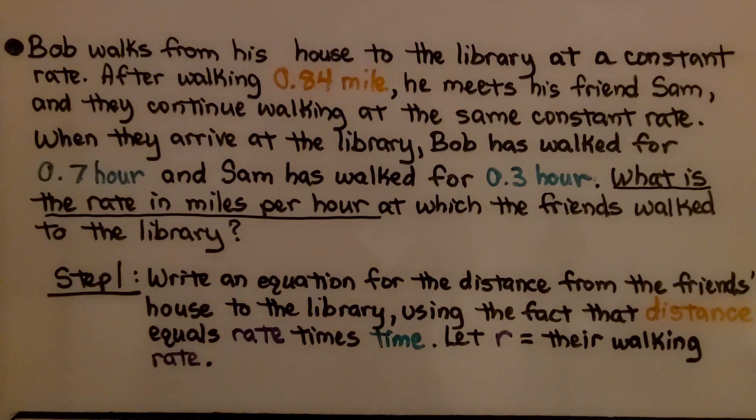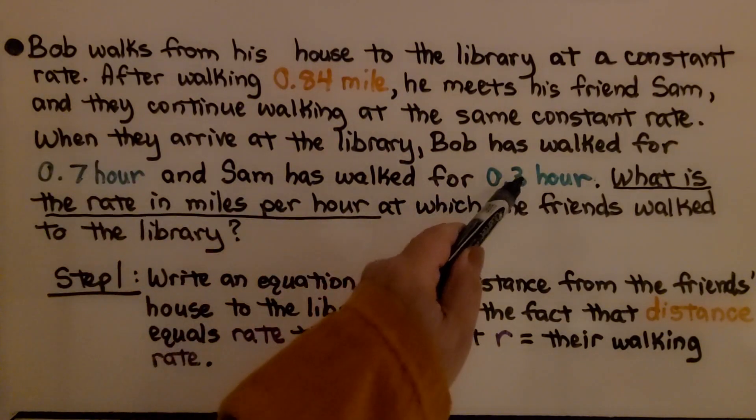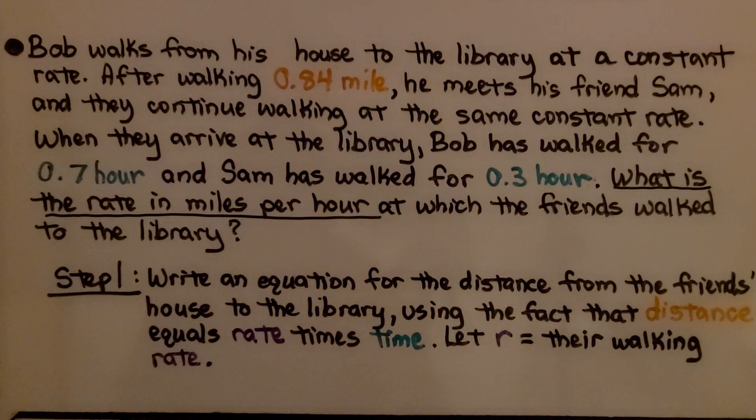So we have Bob and Sam. Bob walks from his house to the library at a constant rate. After walking 0.84 mile, he meets his friend Sam and they continue walking at the same constant rate. When they arrive at the library, Bob has walked for 0.7 of an hour and Sam has walked for 0.3 of an hour.